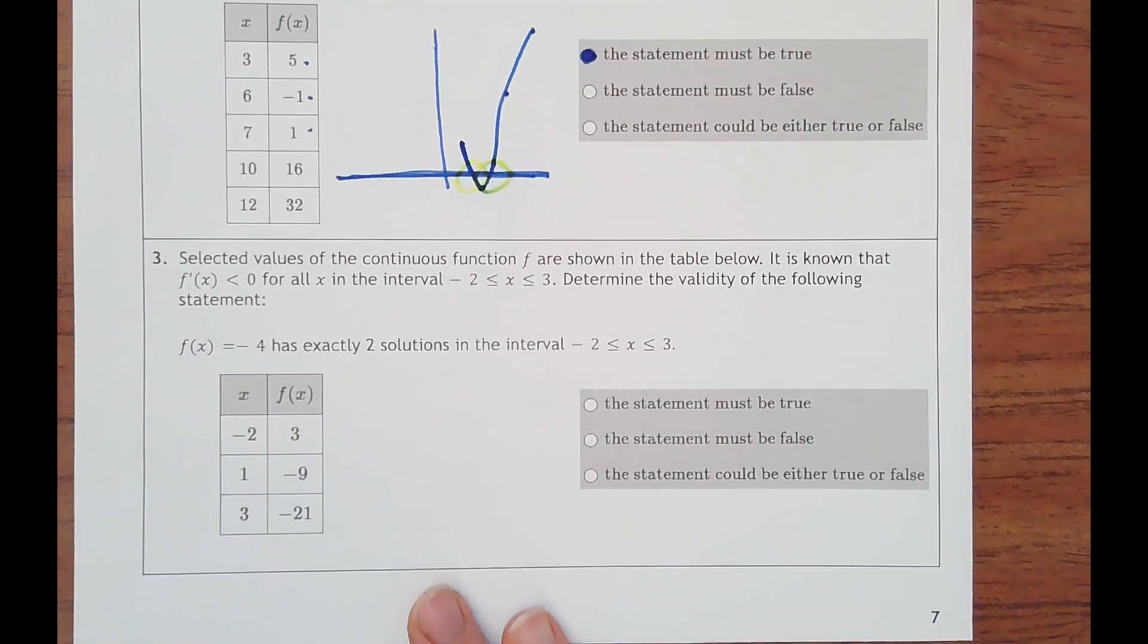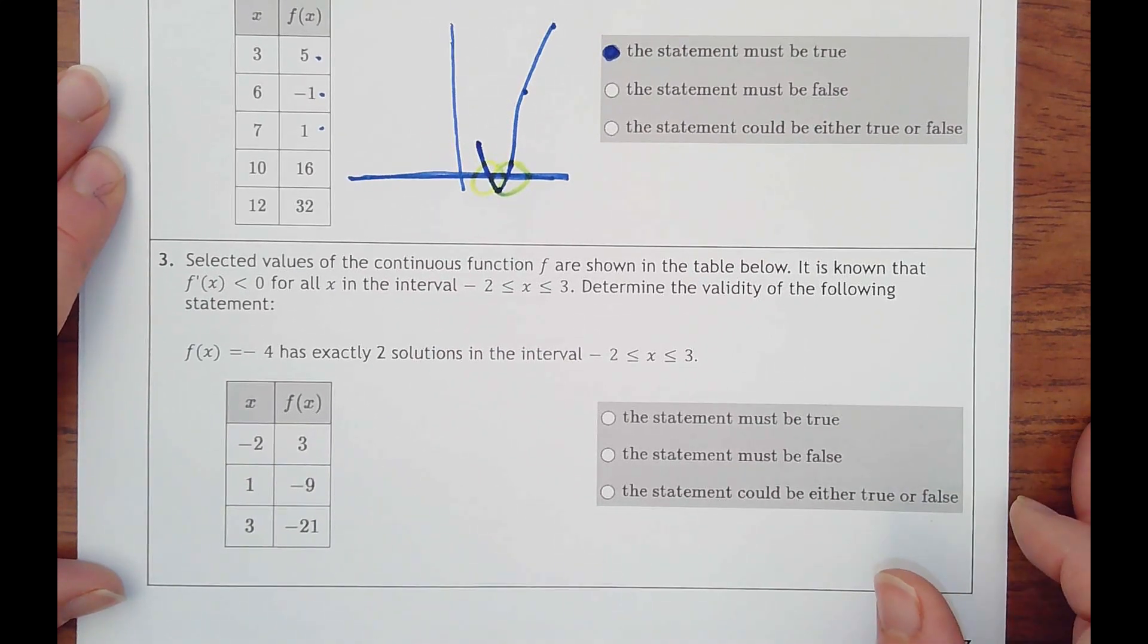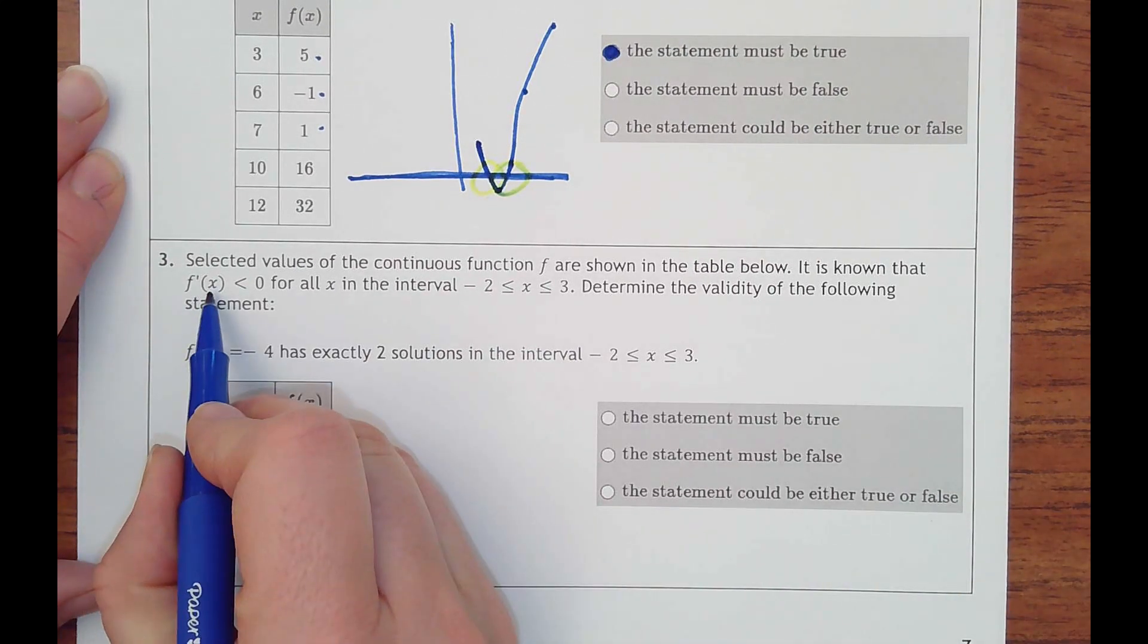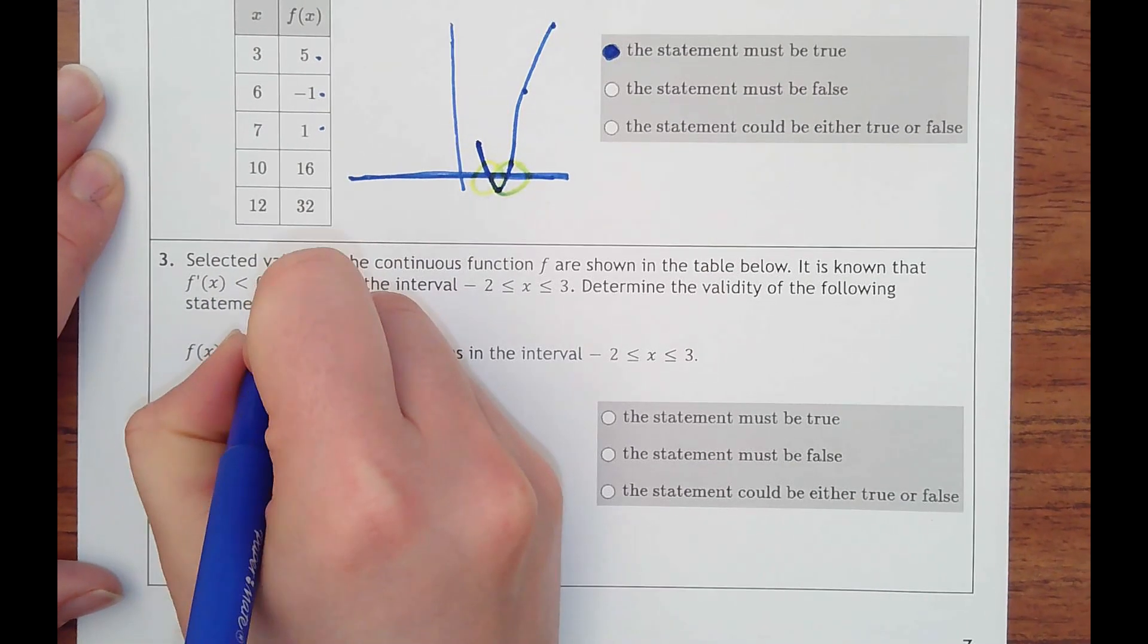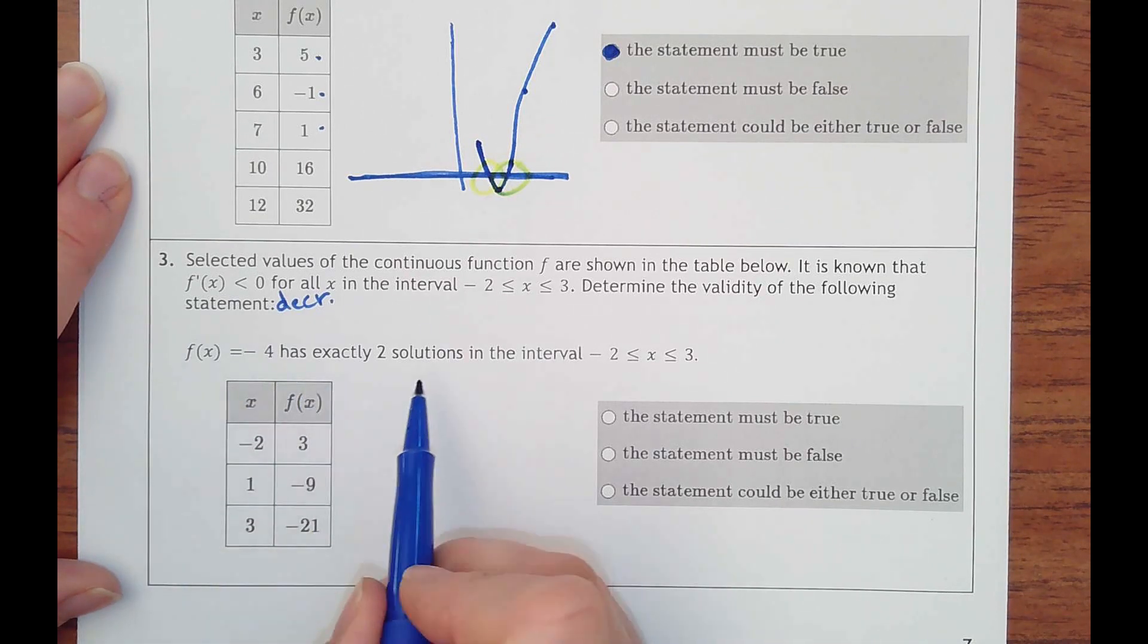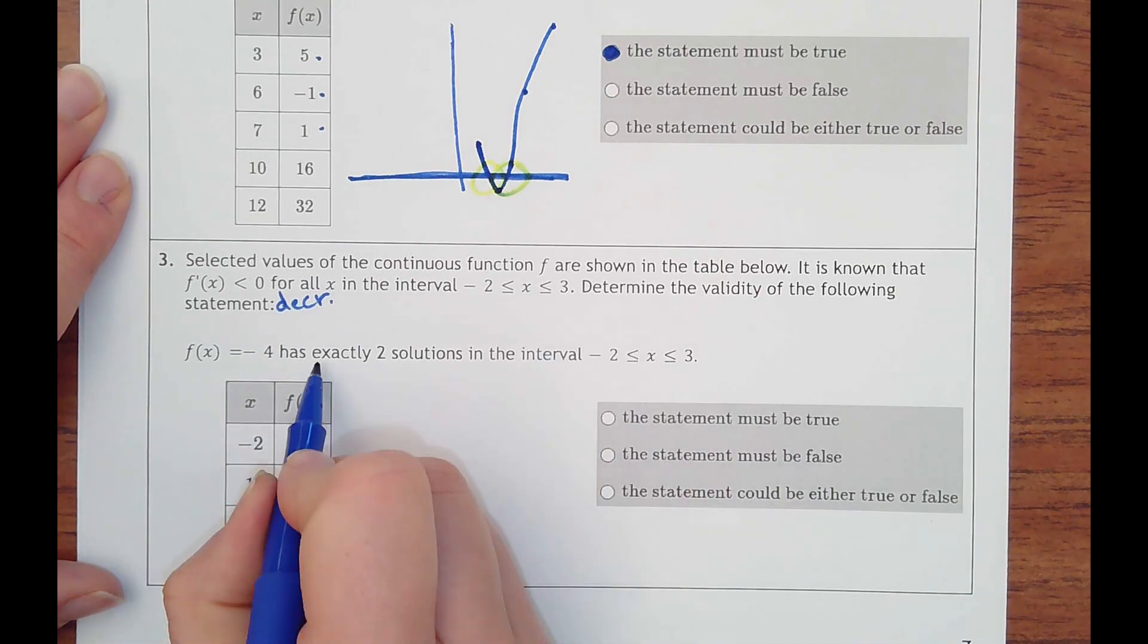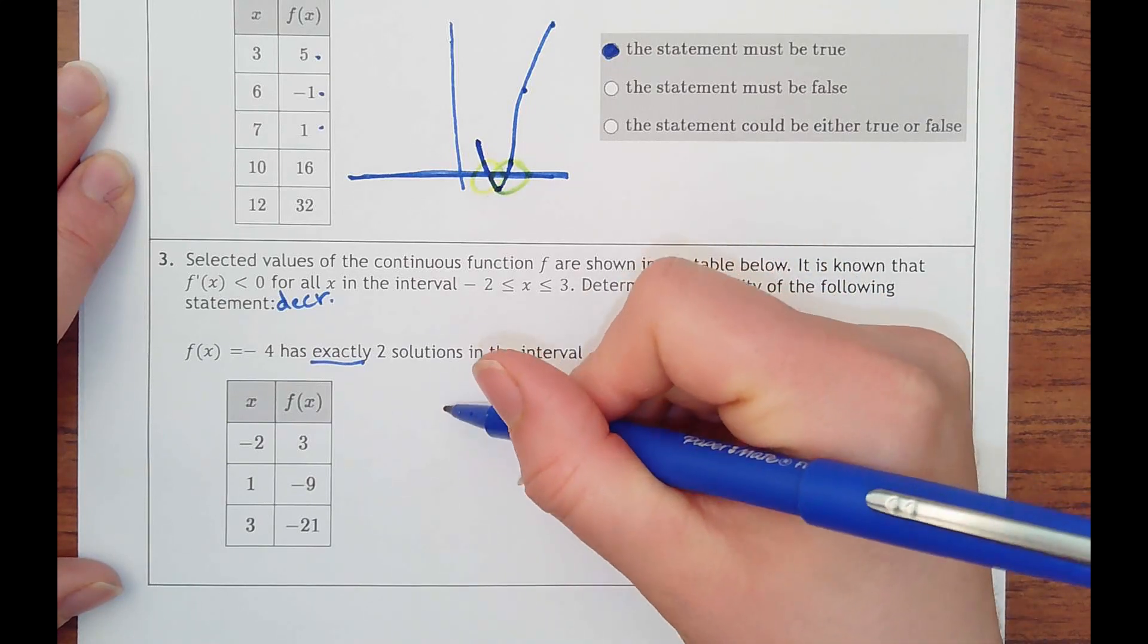All right. And number three, selected values of the continuous function f are shown in the table below. It is known that the derivative of x is less than zero. So it's decreasing in the interval from negative two to three. Determine the validity of the following statement. Y equals negative four has exactly two solutions in the interval. This exactly makes me think, don't know. Let's graph it real quick.